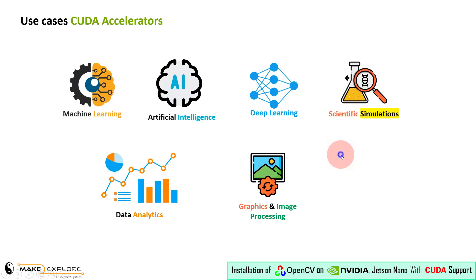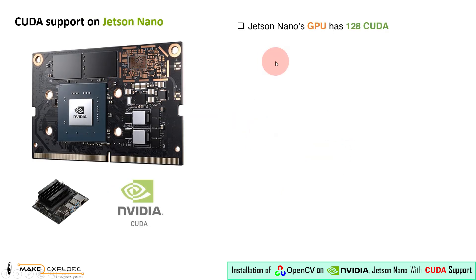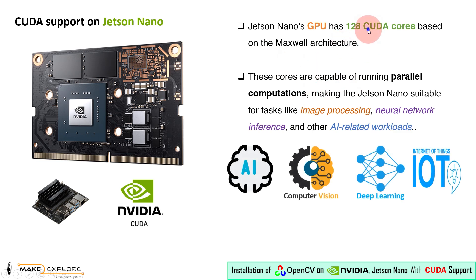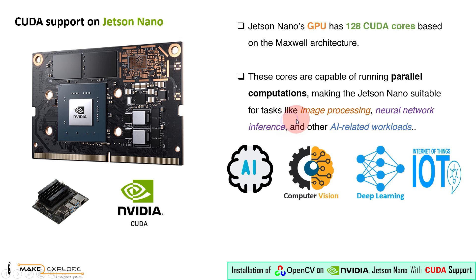You must be wondering how Jetson Nano supports CUDA. Jetson Nano comes with a GPU that has 128 CUDA cores based on the Maxwell architecture. Therefore, these cores are capable of running parallel computations, making the Jetson Nano suitable for tasks like image processing, neural network inference, and other AI-related workloads.